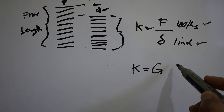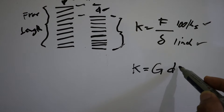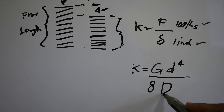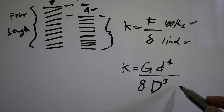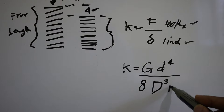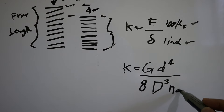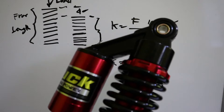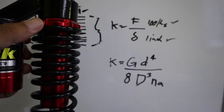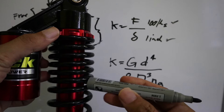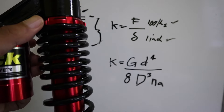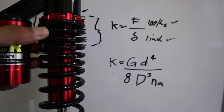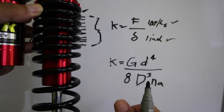Now, there are factors that affect spring rate: material shear modulus, wire thickness, a constant, spring diameter, and number of active coils. Let's explain more clearly. According to the formula, the spring's stiffness or spring rate — how stiff or soft it is — is affected first by the material used.